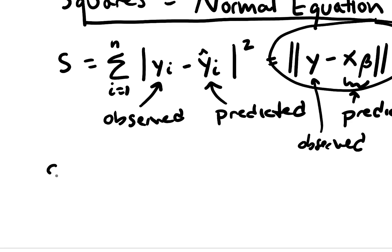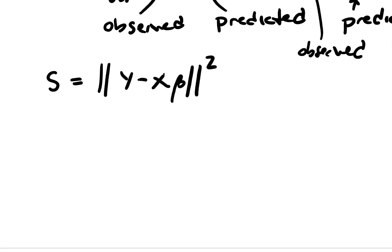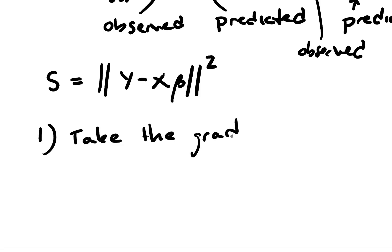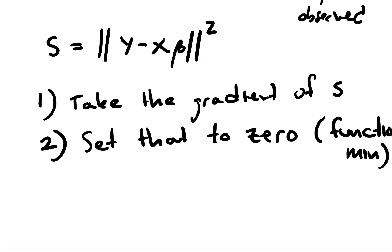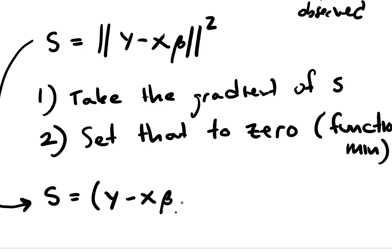I'm going to rewrite this and write it out explicitly. So S is equal to (y minus Xβ) squared. What we're doing is: one, take the gradient of S, and two, set that to zero to get the function minimum. So S equals (y minus Xβ) transpose times (y minus Xβ).